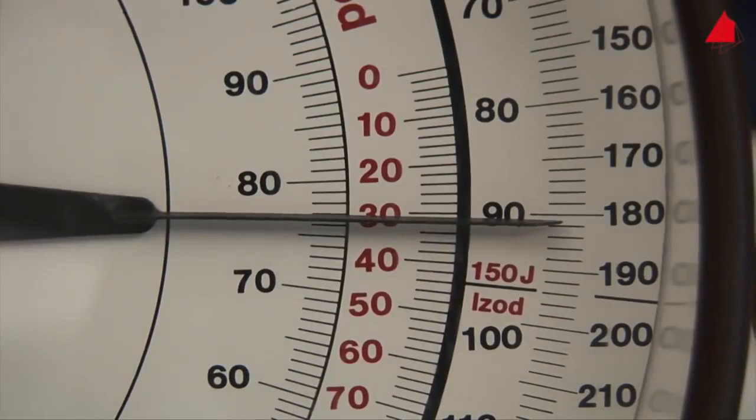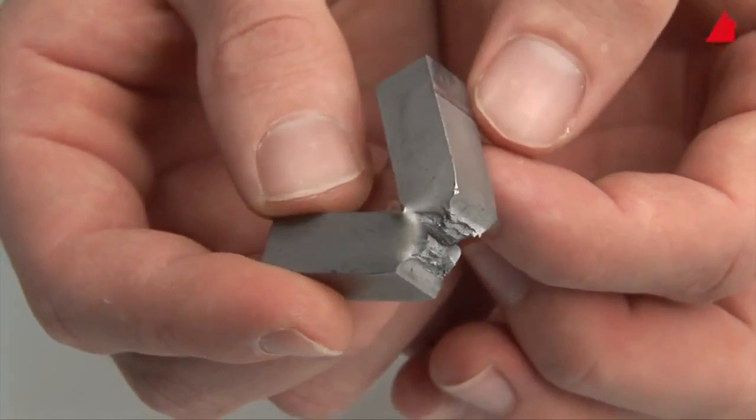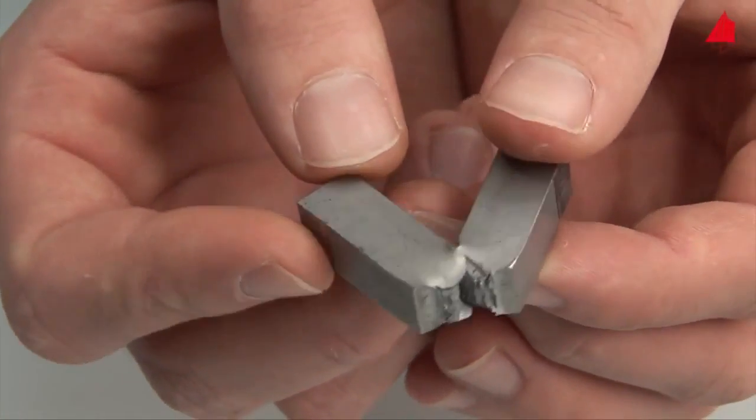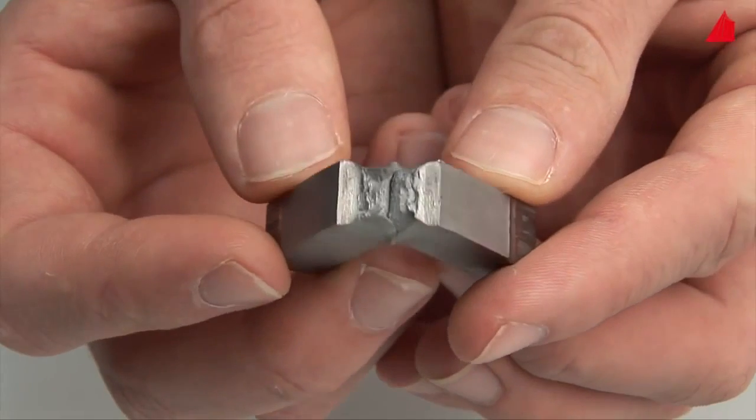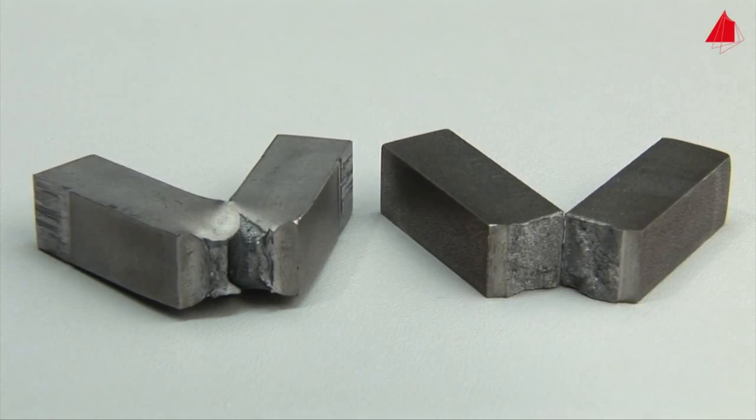An impressive energy of 182 joules has been absorbed by the specimen. Here the specimen did not break into two pieces. Instead it was pushed through the counter bearings under heavy plastic deformation. In comparison with the strain aged steel, the normalised steel absorbs much more notch impact energy and behaves in a very tough manner.